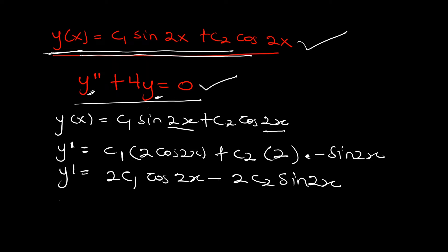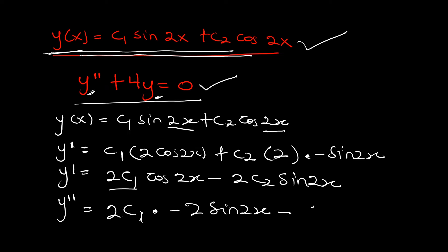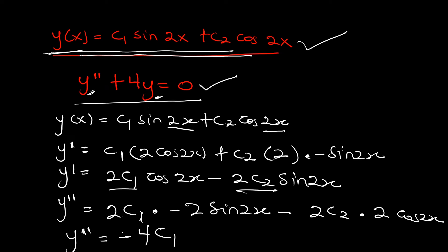Now let's take the second derivative, y''. We have 2c1 as constant; differentiating cos(2x) gives negative 2·sin(2x), contributing a factor of negative 4. For the second term, differentiating negative 2c2·sin(2x) gives negative 4c2·cos(2x). So the second derivative y'' equals negative 4c1·sin(2x) minus 4c2·cos(2x).